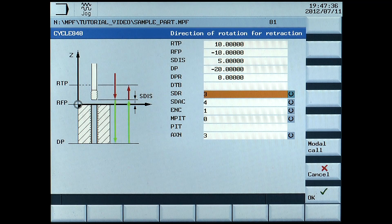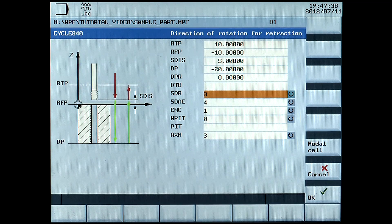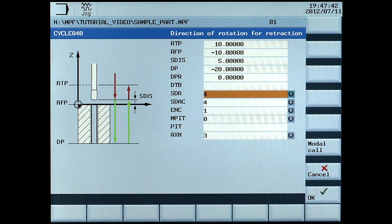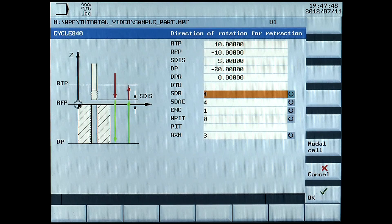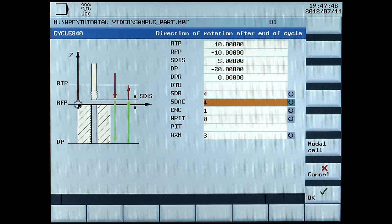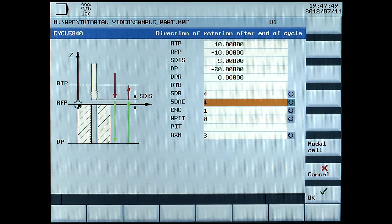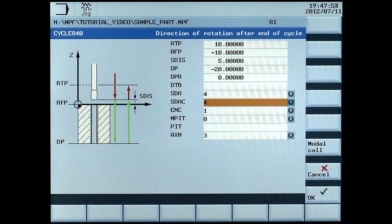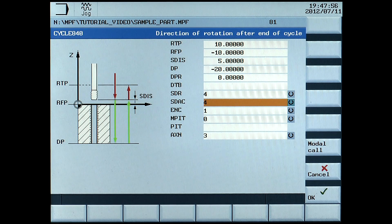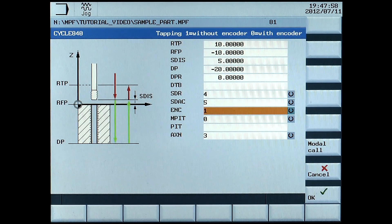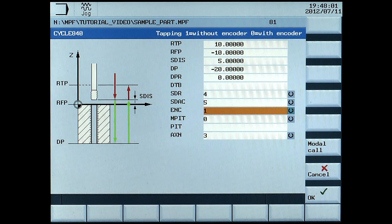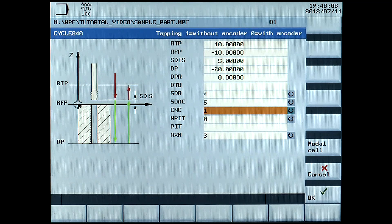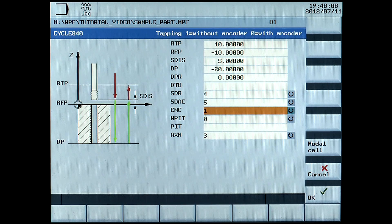SDR, direction of rotation for retraction, select 4, which is counter clockwise. SDAC, direction of rotation after end of cycle, select 5, which is spindle stop. ENC, choosing if spindle has an encoder, select 0, which is with encoder. That depends on your machine.